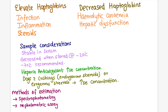Regarding sample considerations: haptoglobin is stable in serum. If you want to store the serum sample, store it at minus 70 degrees; storing below that can reduce haptoglobin concentration. Regarding anticoagulants, heparin can increase haptoglobin concentration, so do not collect blood in heparin for haptoglobin assays. Dogs receiving exogenous steroids or having excess endogenous steroids will also have high haptoglobin concentration. Laboratory methods of estimation include spectrophotometry and nephelometric assays.